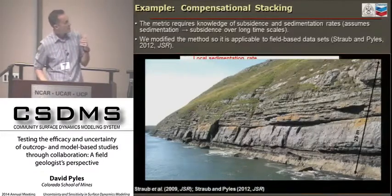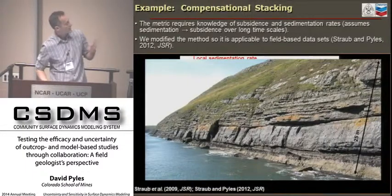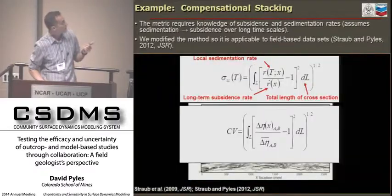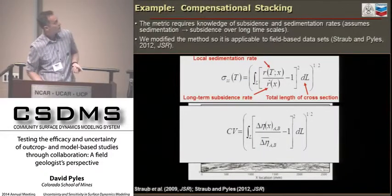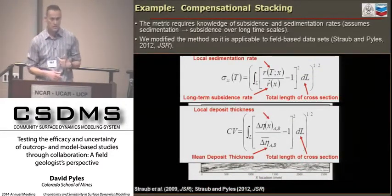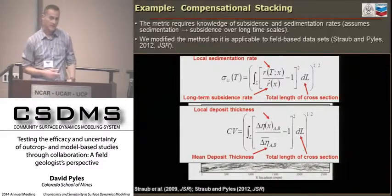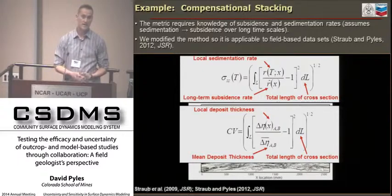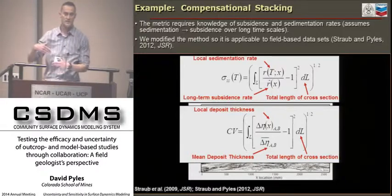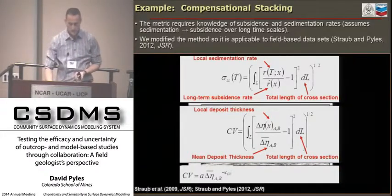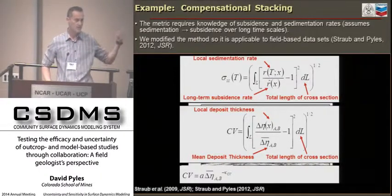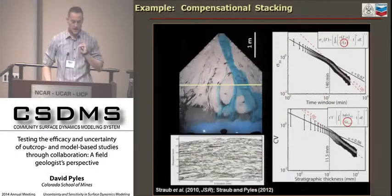What we tried is refining the input variables to measure compensational stacking. We refined it so that the numerator is now local deposit thickness scaled over the mean deposit thickness between any two stratigraphic surfaces. We're evaluating this coefficient of variability for all pairwise combinations of surfaces that we can measure in an outcrop. An exponential decay function fits a best curve and defines our compensation index, which is the exponent.